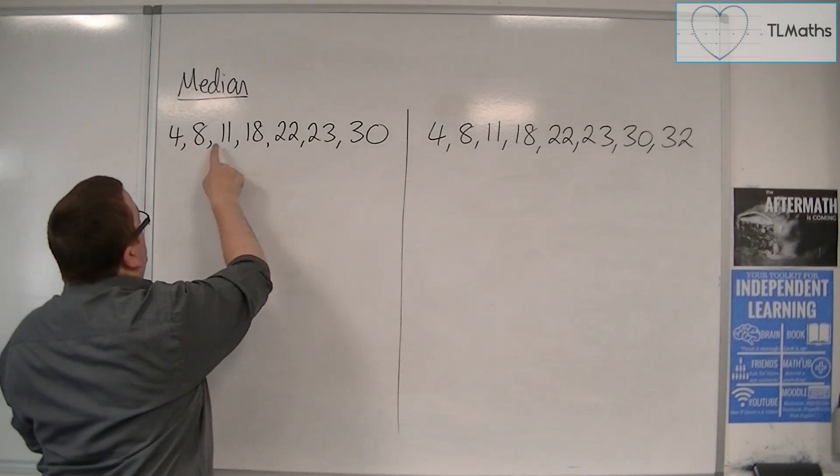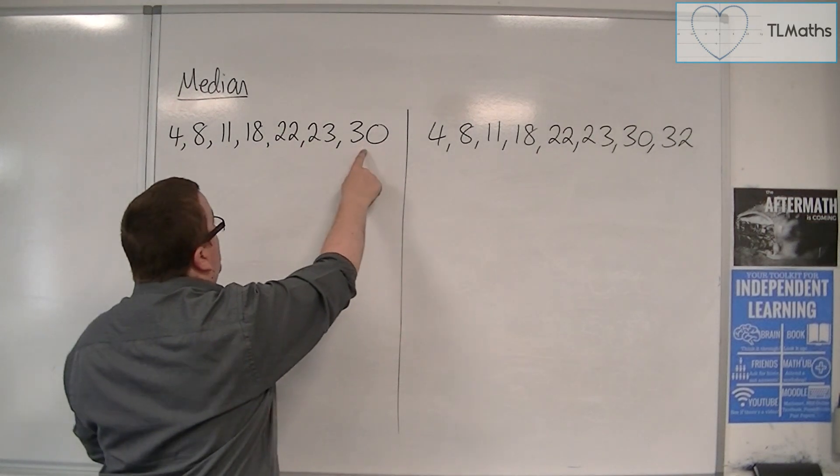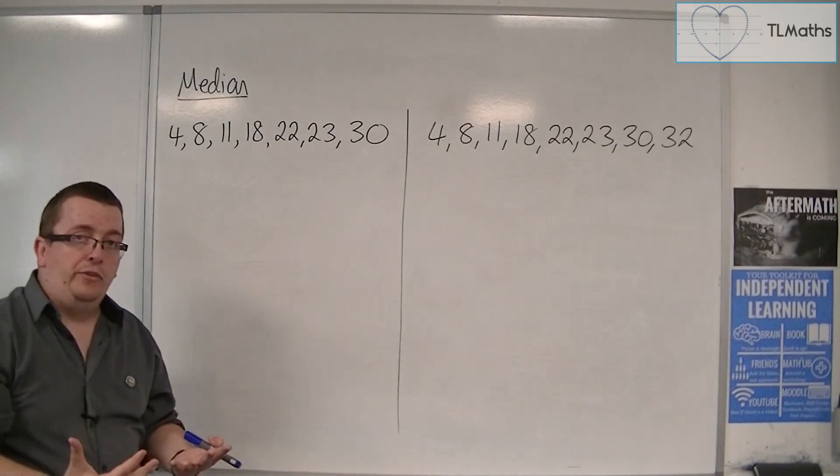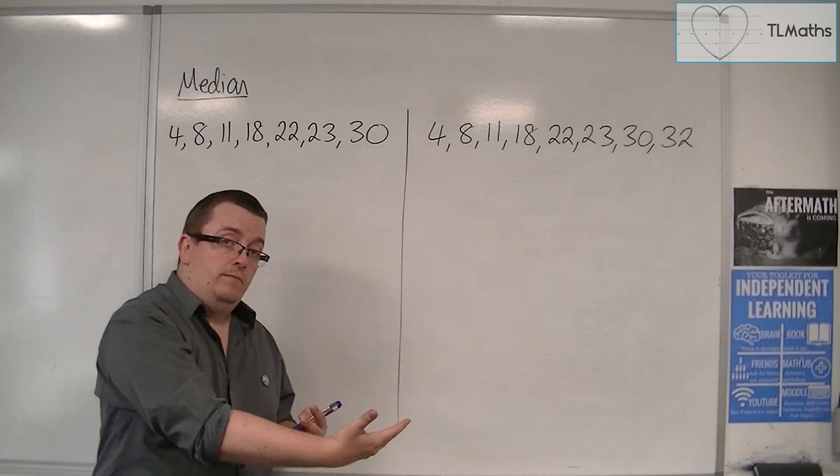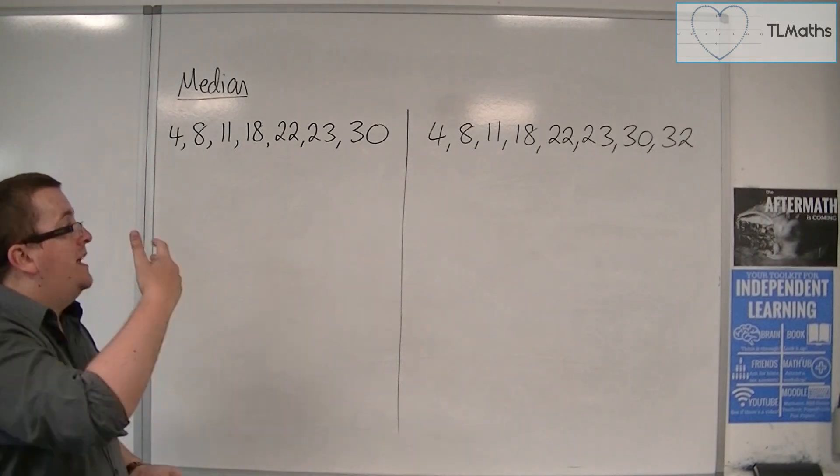So in this case, 1, 2, 3, 4, 5, 6, 7. So there are seven numbers. You add one to that to get you eight, and then you halve it. So that gets you four.